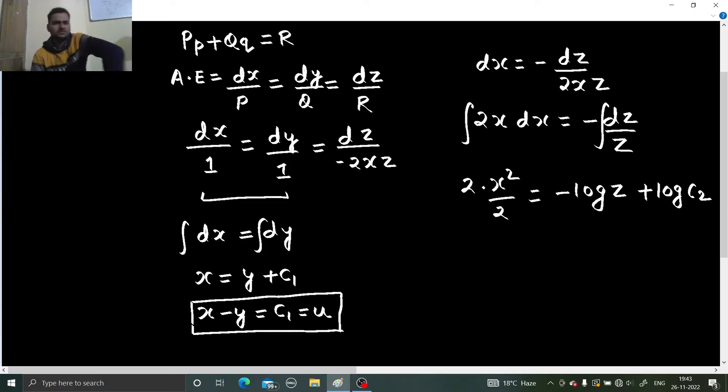Or C2 simply. Don't make it complex. So x square plus log z equals to c2. You can also name it as v. There you get your equation number 2.